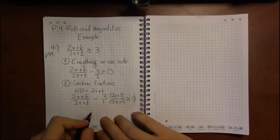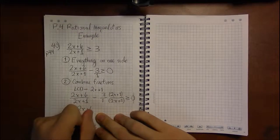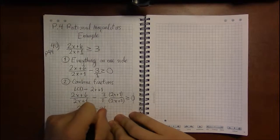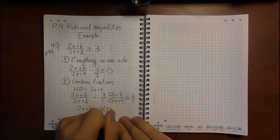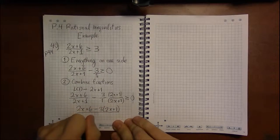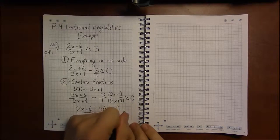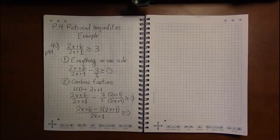And then, we'll be able to combine fractions. So, this will be 2x plus 6 minus 3 times 2x plus 1. And then, all of this will be over our least common denominator.